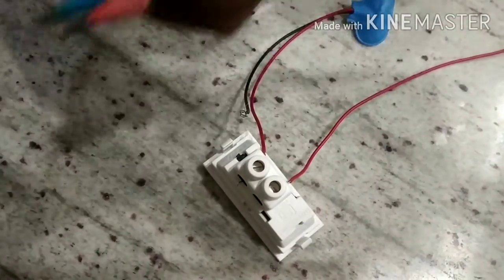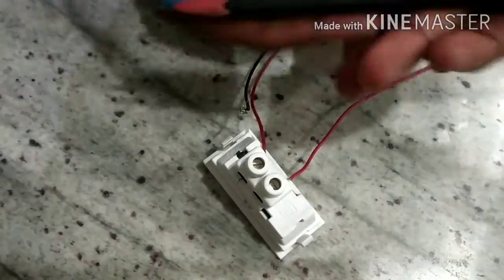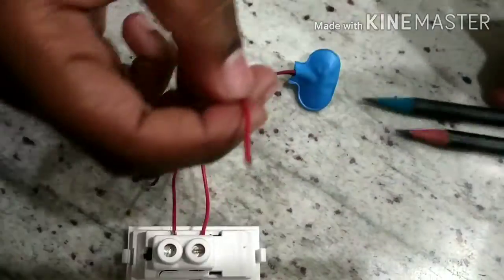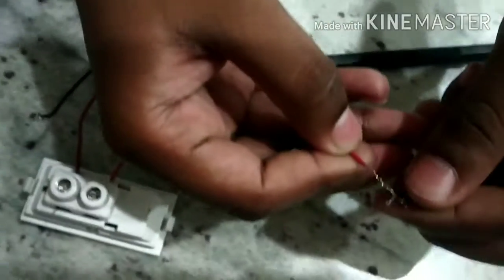See, I have fixed the extra positive wire. Now take both of the pencils you have sharpened both sides and take the extra positive wire and fix it to the nib of the pencil.